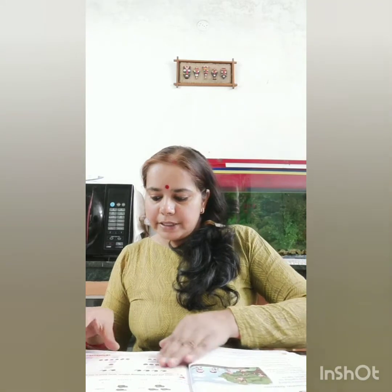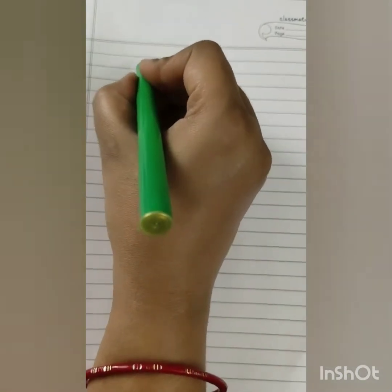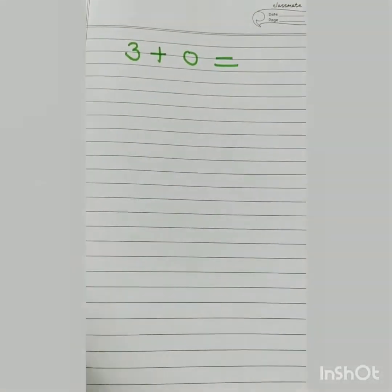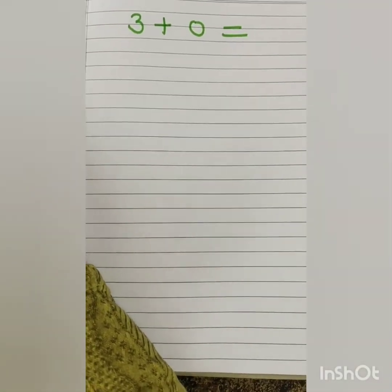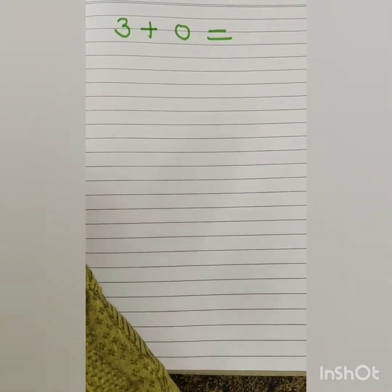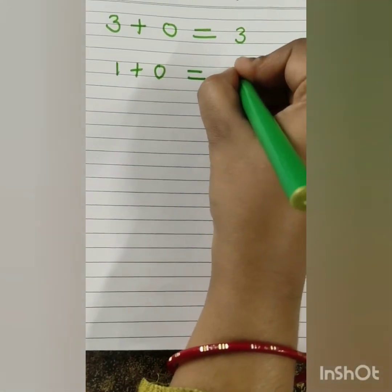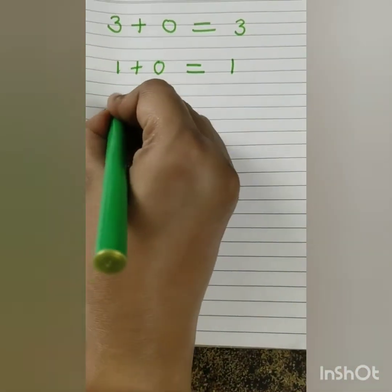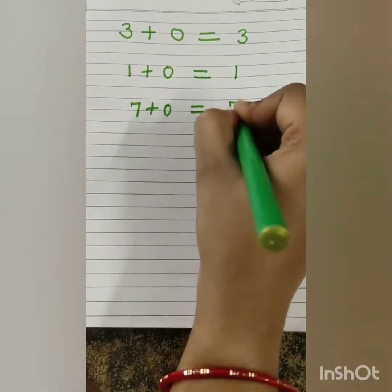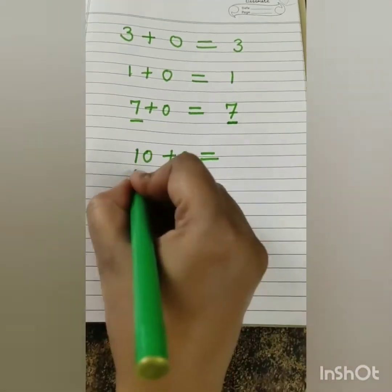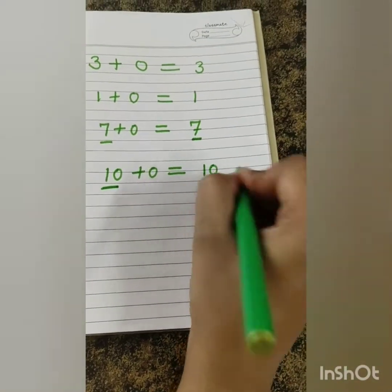This type of picture addition is given in your book also — you have to complete that. Picture additions are given in your maths book. Now, suppose if I had to add zero — three plus zero. I have three pencils and my mother gives me zero pencils, so how many pencils do I have? Three only. If we add zero to any number, the answer is the number itself. Seven plus zero? Seven. Ten plus zero? Ten.